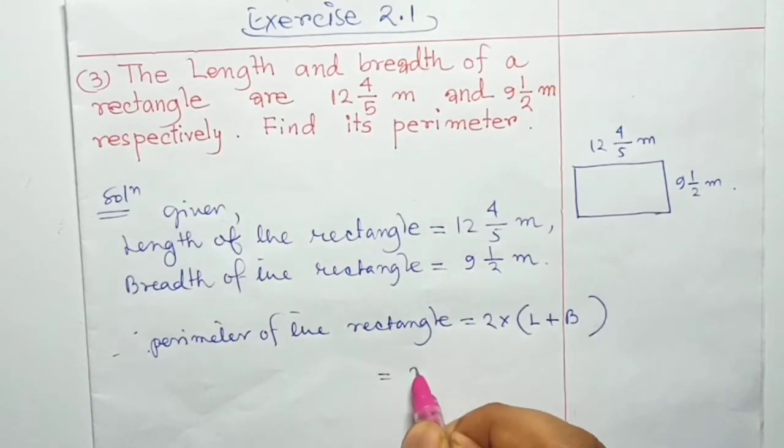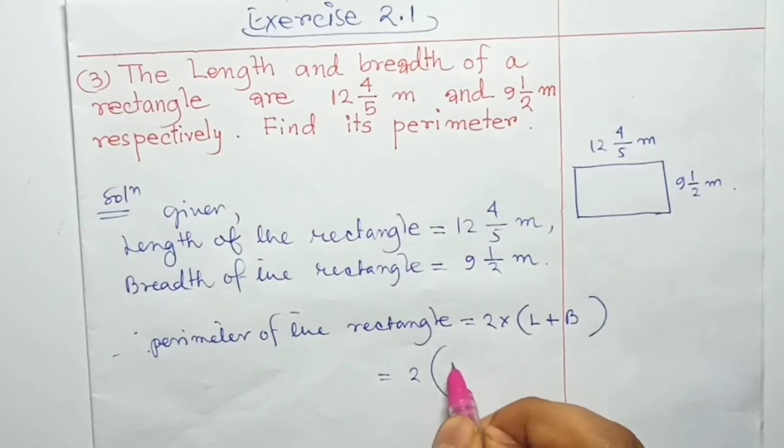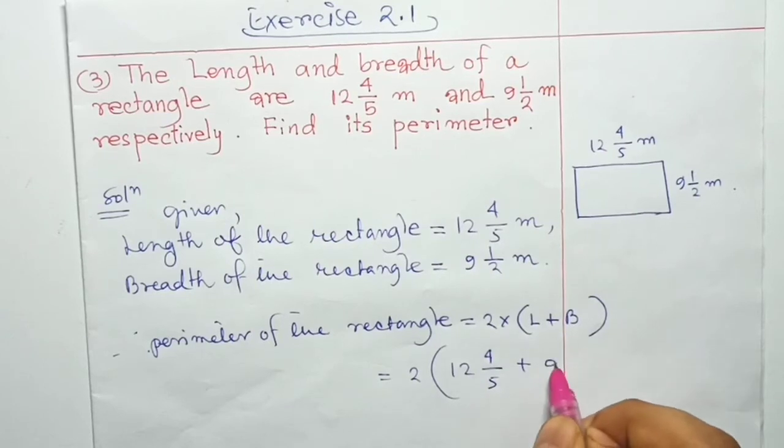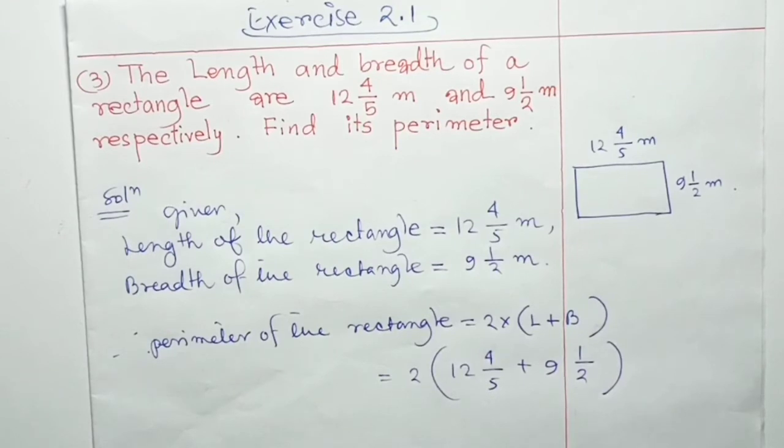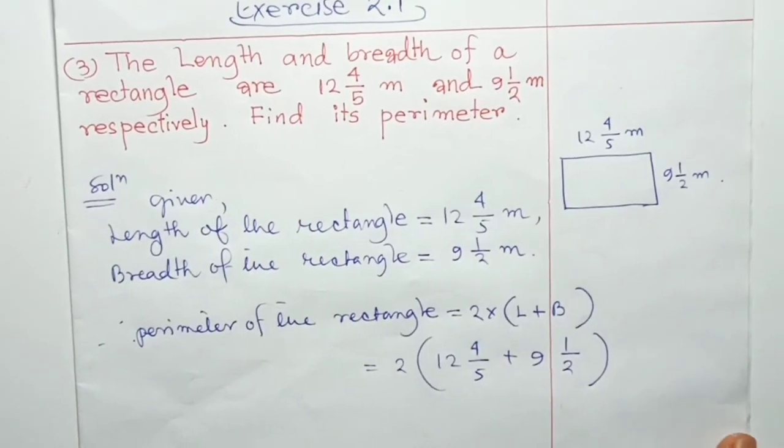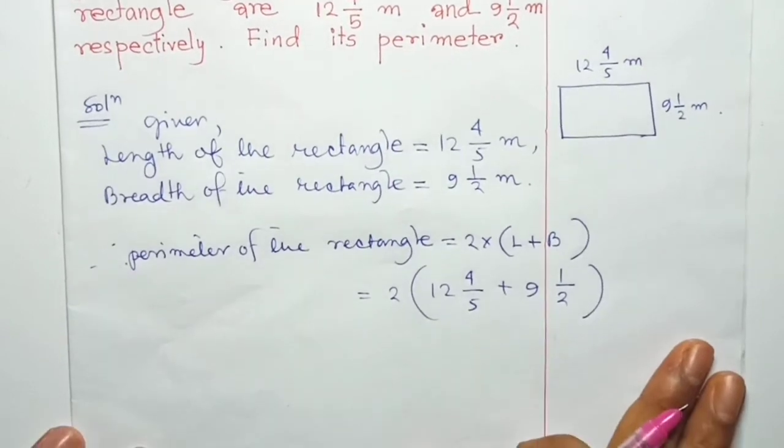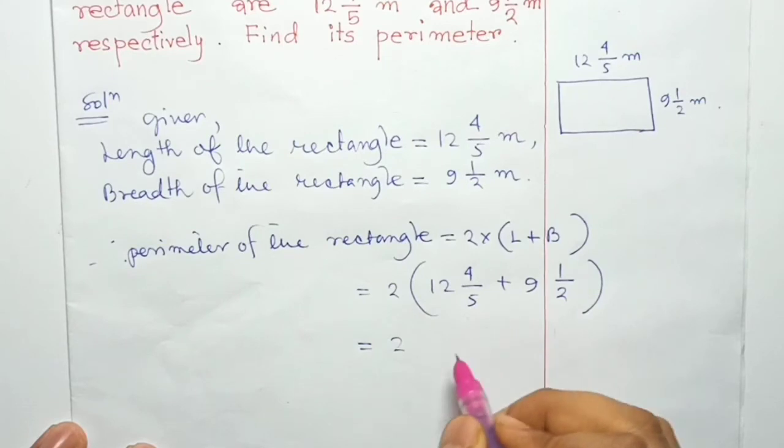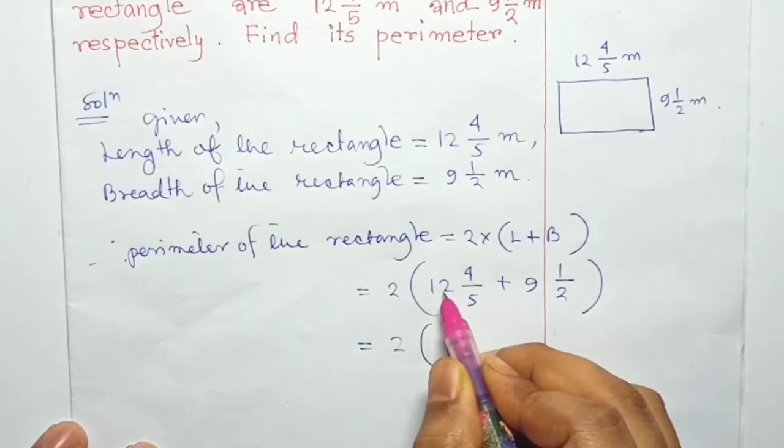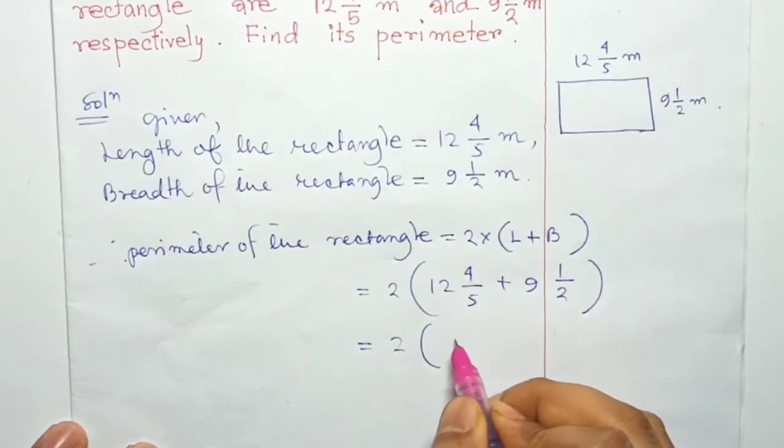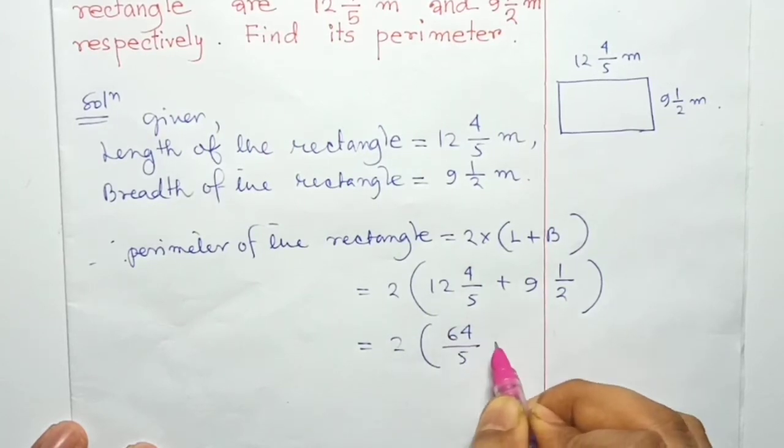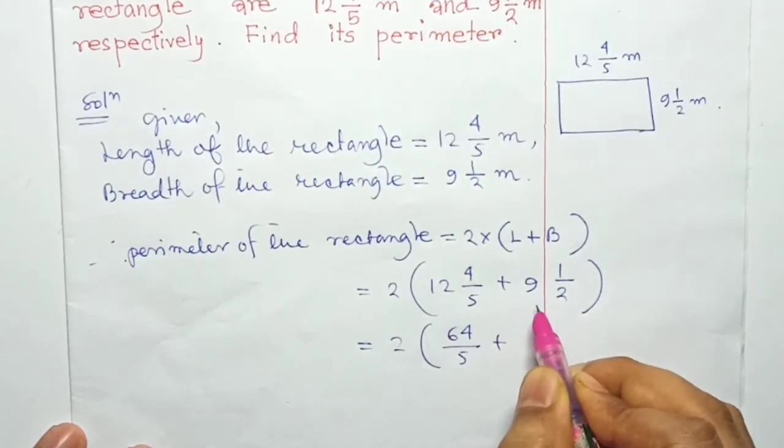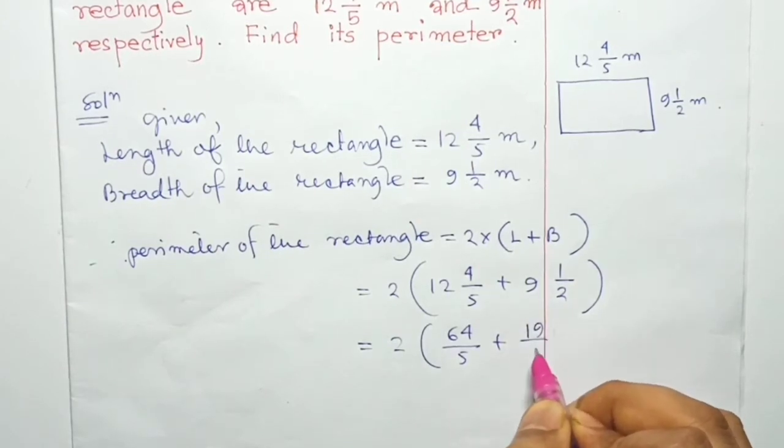So perimeter = 2(12 and 4/5 + 9 and 1/2). Convert mixed numbers: 12 and 4/5 = (12×5 + 4)/5 = 64/5. And 9 and 1/2 = (9×2 + 1)/2 = 19/2.